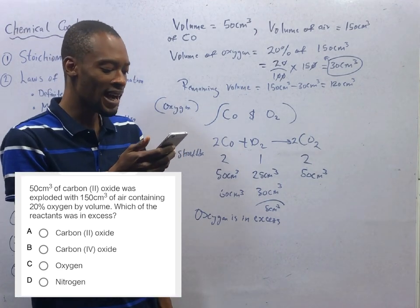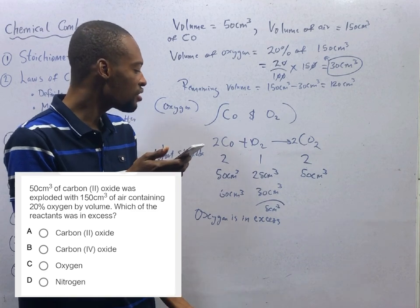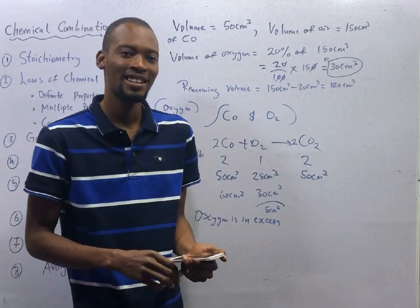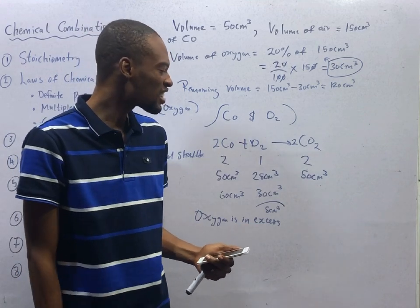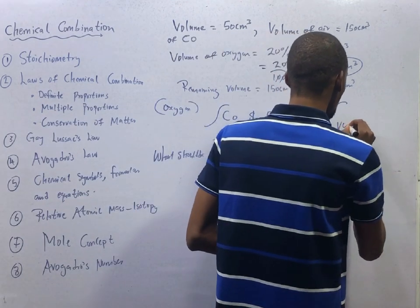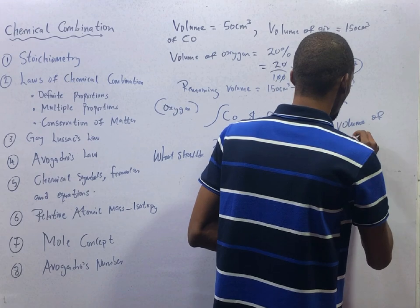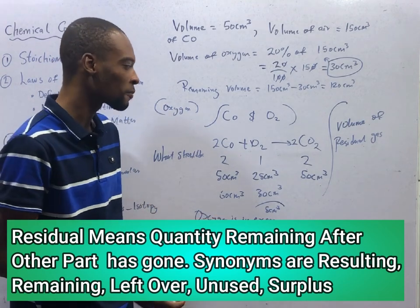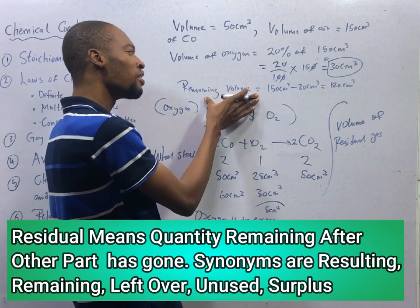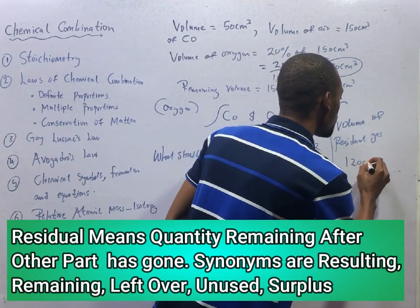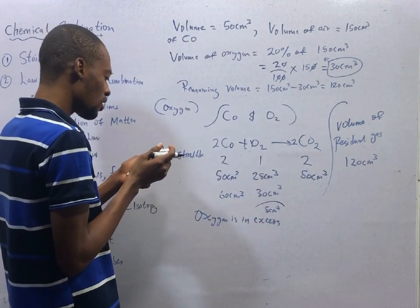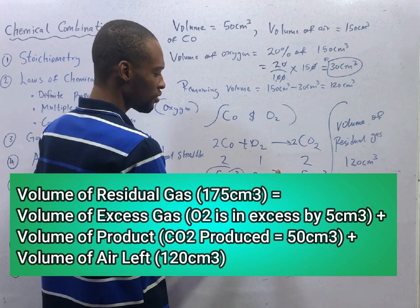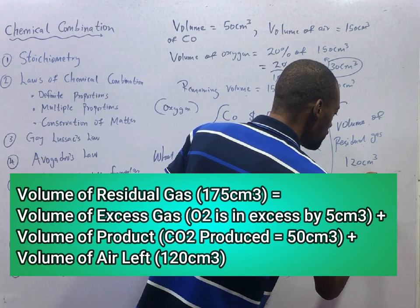So which of the reactants was in excess? Oxygen was in excess. If you are asked which of them is the limiting reagent, the limiting reagent is simply the one that is not enough. That is carbon monoxide. There is another way this is usually asked that confuses students. They will tell you what is the volume of the residual gas. If they ask you the volume of residual gas or what is remaining in the container. What is remaining in the container is the remaining air volume which did not react. That is 120 cm³ plus 5 cm³. Then all the carbon monoxide reacted. Nothing remaining. Then out of the 30 cm³ of oxygen, only 25 cm³ reacted. Meaning 5 cm³ did not react.